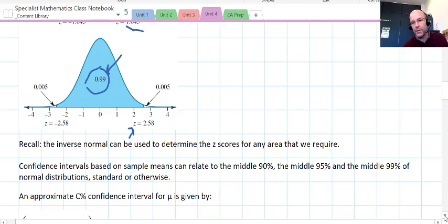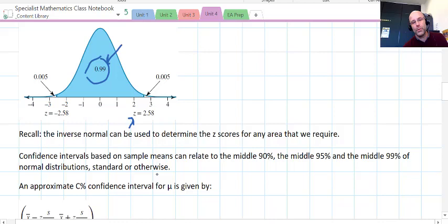Confidence intervals are based on sample means. That's what this video is about, that's the stats we're using, and it can relate to the middle 90%, 95%, 99% of normal distributions, whether they're standard or other types of normal distributions.